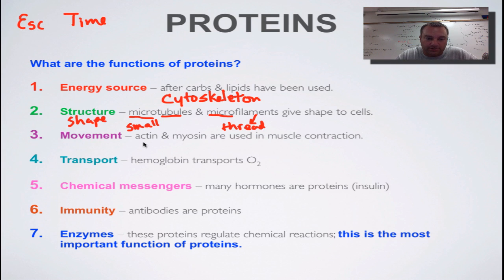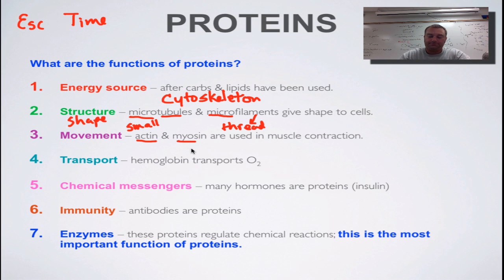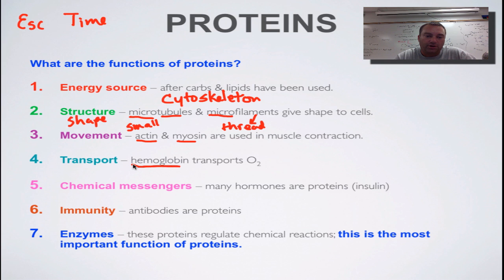For movement, think of your muscles. Your muscles use two proteins — one is called actin and one is called myosin. These two proteins slide back and forth when your muscles contract. So when you bend your bicep, those actin and myosin molecules are sliding across from each other — that's contraction — and relaxation is when they slide back. For transport, think about your red blood cells — they use a protein called hemoglobin to carry oxygen. We covered that in a previous episode.